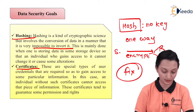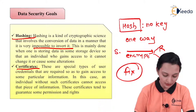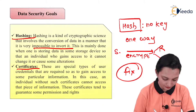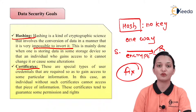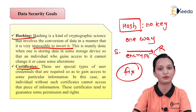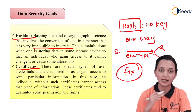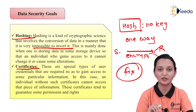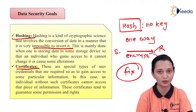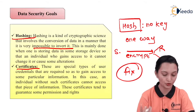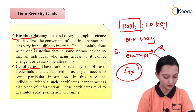The next concept is certificates. These are special types of user credentials required to gain access to some particular information. An individual without such certificates cannot access that piece of information. These certificates tend to guarantee some permission or rights. Many times you are required to provide your identity so that the sender will provide you the next information on the next web page — we are all familiar with this. This is providing security of data to the authorized user, and for that purpose you require to gain the right copyright. If your login information is correct, then only you will become the authorized person to access the information. Certificates play an important role in providing huge integrity to your data.